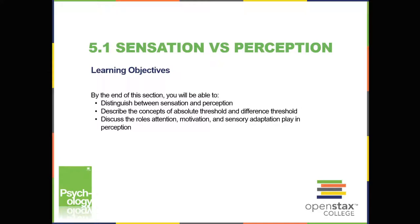What does it mean to sense something? Sensory receptors are specialized neurons that respond to specific types of stimuli. When sensory information is detected by a sensory receptor, sensation has occurred. For example, light that enters the eye causes chemical changes in the cells that line the back of the eye. These cells relay messages in the form of action potentials to the central nervous system. The conversion from sensory stimulus energy to action potential is known as transduction.